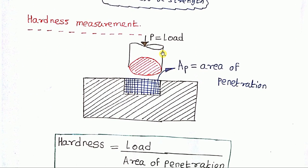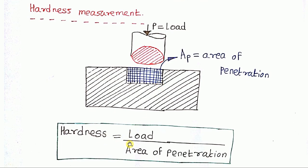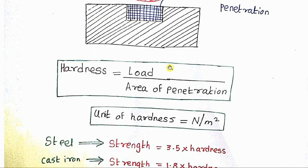This is a very important viva question. How is hardness measured or what are the parameters for measuring hardness? Hardness is nothing but load per unit area of penetration. That is, the load that I am applying on the material to the area of penetration. The unit of hardness is Newton per meter square.